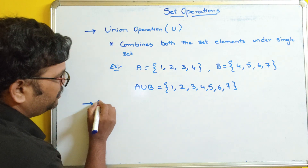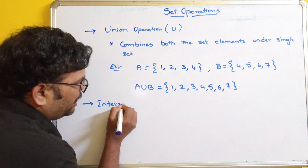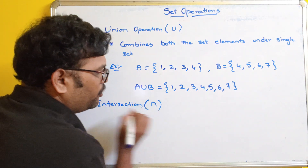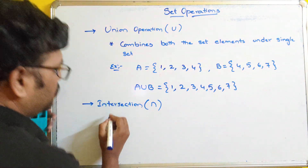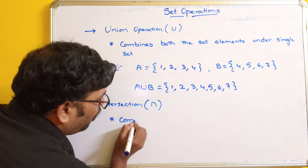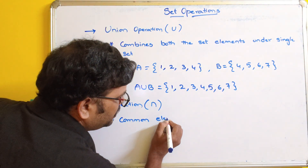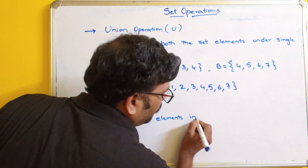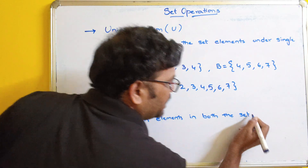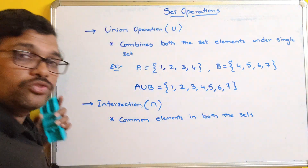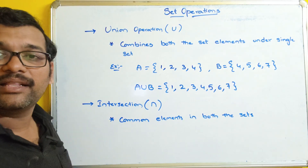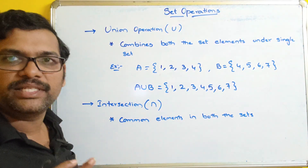The second operation is intersection. Intersection is usually denoted as ∩. It gives the common elements in both sets. This intersection operation is also applied between two different sets, and we get the common elements present in both.